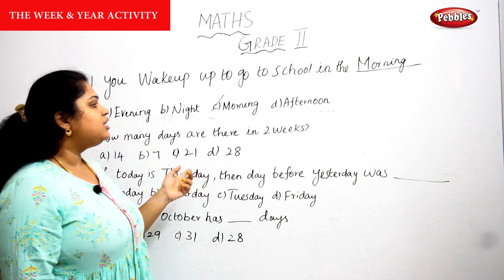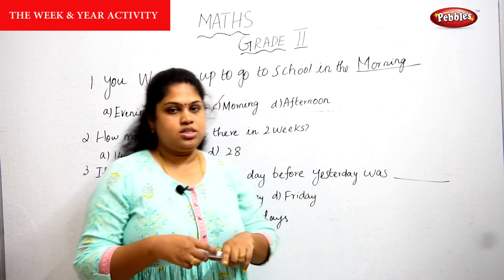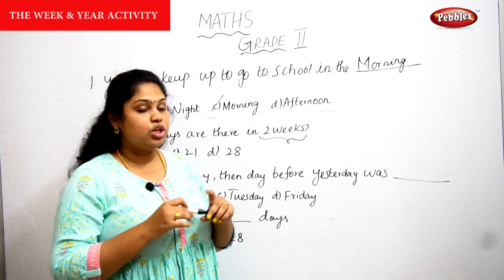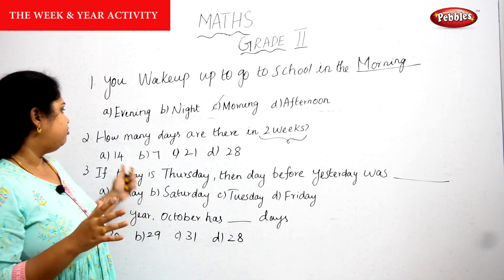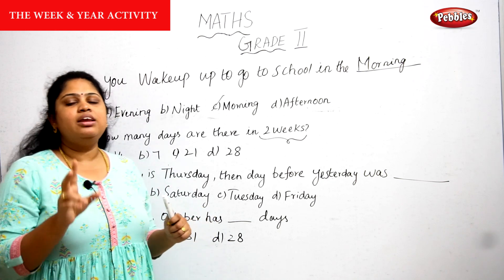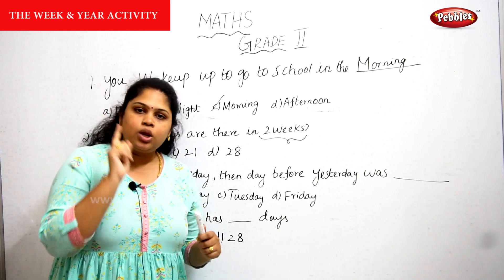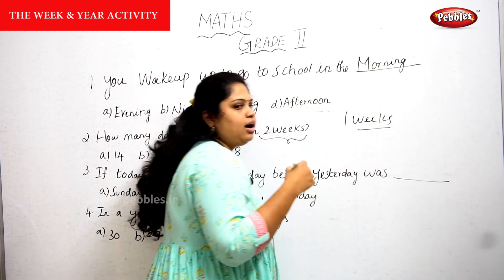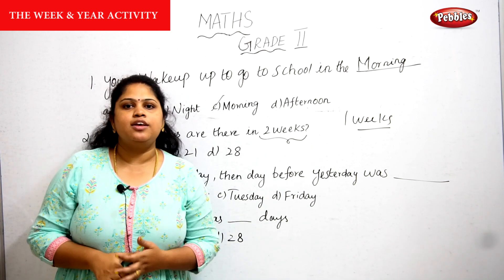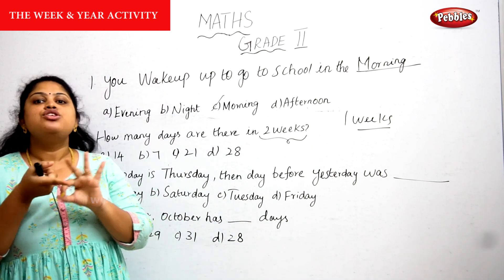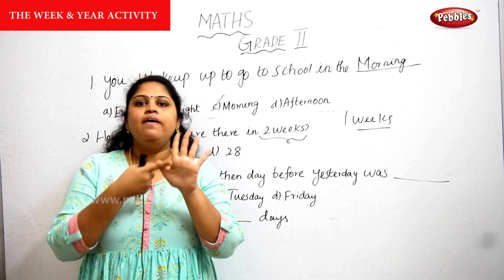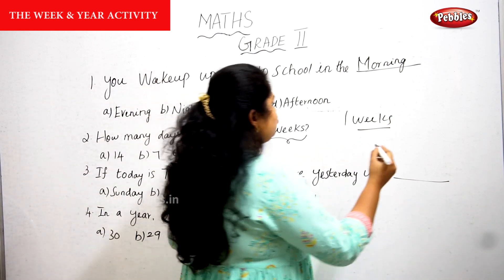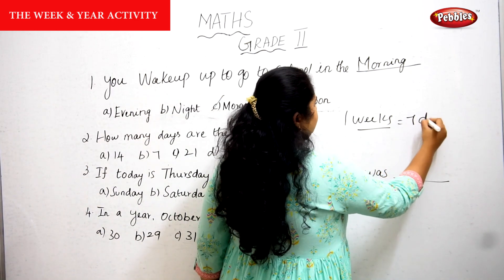Second question: how many days are there in two weeks? You should be very clear about the question. One week — how many days? If you don't know, just lift your fingers and say the days of the week: Sunday, Monday, Tuesday, Wednesday, Thursday, Friday, and Saturday. That is seven days. One week is equal to seven days.